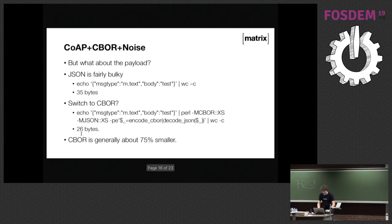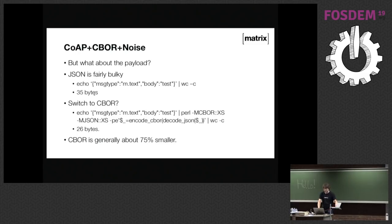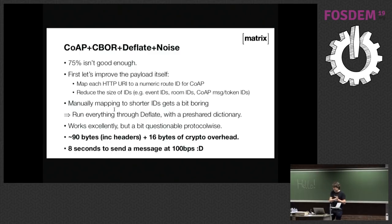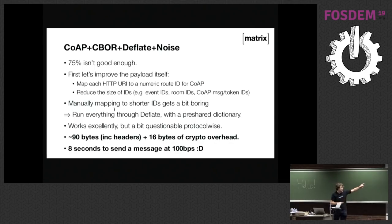For the payload: JSON is about 35 bytes for a basic message. Switching to CBOR binary encoding gets about 75% smaller. We also wanted to map URIs to numeric routes and reduce ID sizes. Rather than mapping manually, we ran everything through a deflate library using a shared dictionary — great for saving bandwidth, though a disaster for protocol fragility since everybody has to implement the same deflate library with the same dictionary. But it means we can get down to 90 bytes plus 16 bytes of crypto overhead — that's eight seconds to send a message at 100 bits per second.